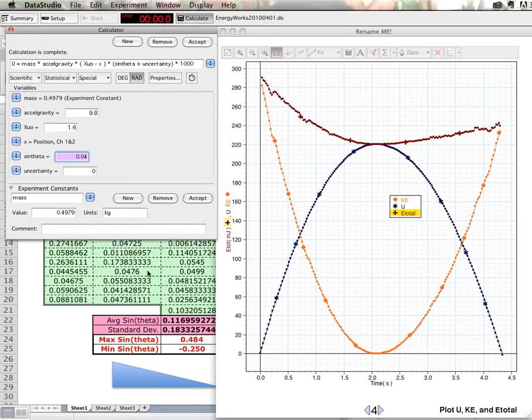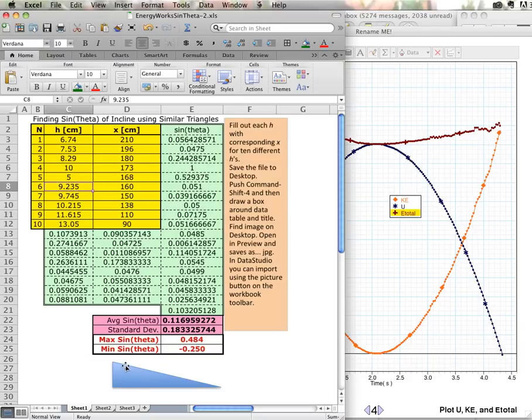To get that sine theta, we want to measure various heights at different positions along the incline. If we mark a position on the track—don't literally mark the track—record the value on the track, the x value that sits on that meter stick that's already on the track, and then from that point measure the height.